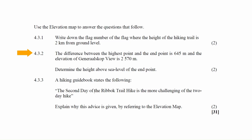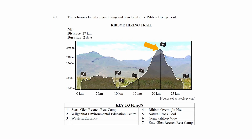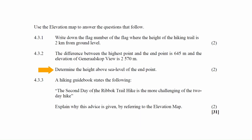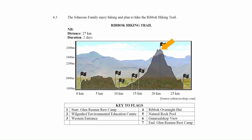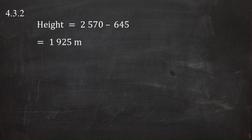In question 4.3.2, the difference between the highest point and the end point is 645 meters, and the elevation of General's Scope View is 2,570 meters. The height above sea level of the end point is 2,570 meters minus 645 meters, which equals 1,925 meters.